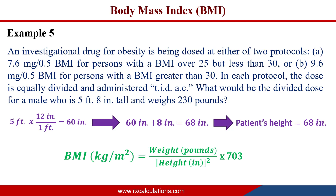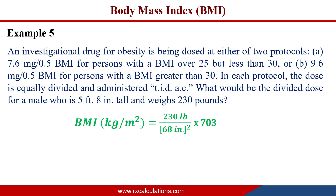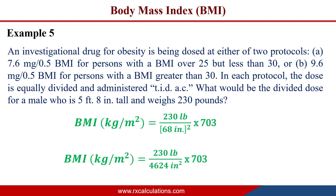Now substituting into BMI = (weight in lbs ÷ height in inches²) × 703: BMI = (230 ÷ 68²) × 703 = (230 ÷ 4624) × 703. The 4624 comes from squaring 68. After simplification, BMI = 34.97 kg/m².